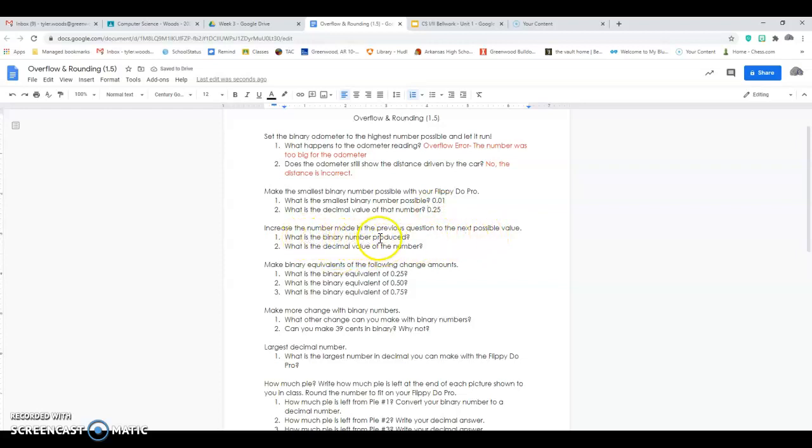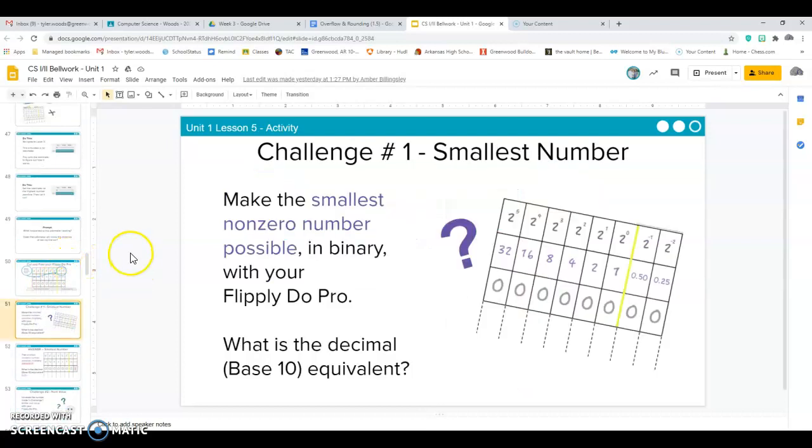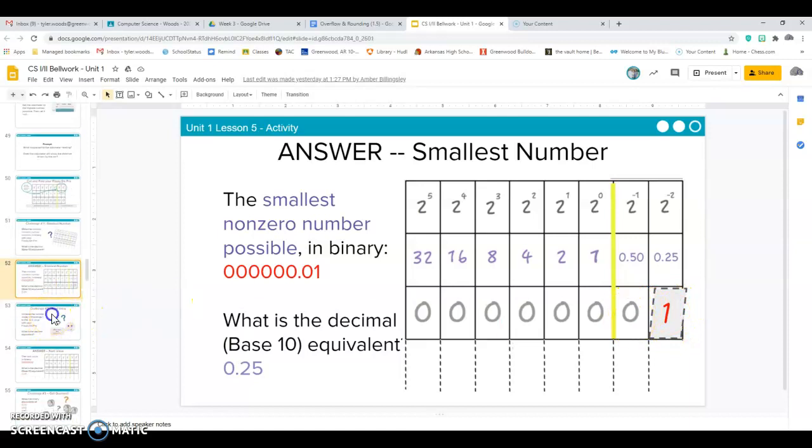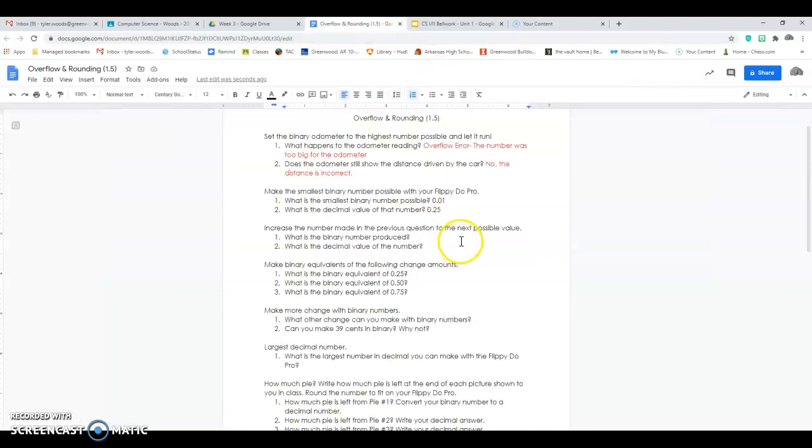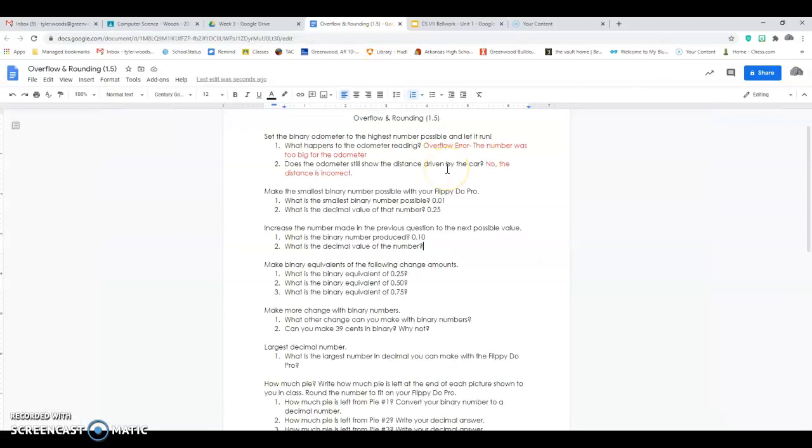What is the binary number produced? Increase the number made in the previous question to the next possible value. So let's go back and look. If I wanted to increase this by one to the next possible value, this is just showing kind of the answer for the last one. If I wanted to increase it by the next possible value, what is the next possible value in binary? So we know that, remember just like our old key here, you just basically make this a 0 and make this one a 1. So our next possible value would be 0, all these zeros, 0.10. So our answer is 0.10, what's the decimal value of that number? Well, 2 to the negative first power is 0.50, so basically it's 0.5.